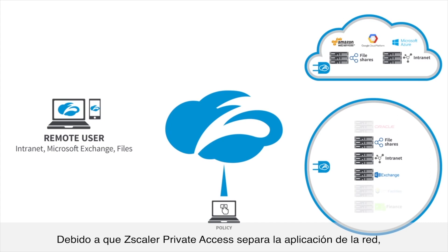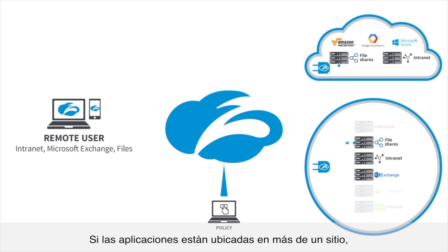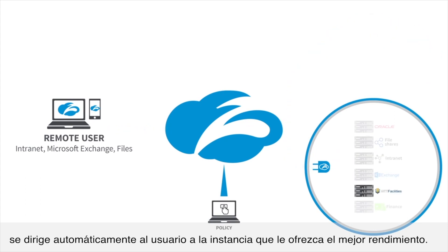Because Zscaler Private Access separates the application from the network, the physical location of the application becomes irrelevant. If apps are located in more than one place, the user is automatically directed to the instance that will give them the best performance.